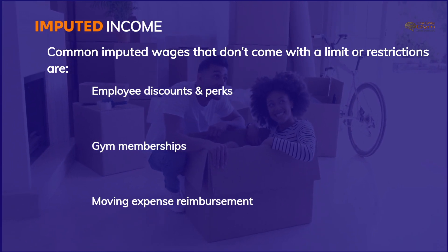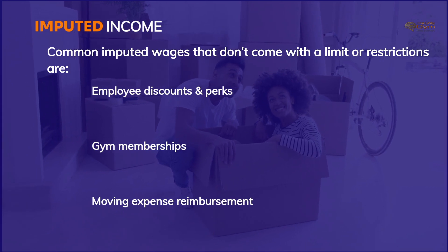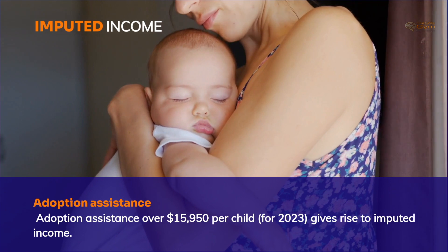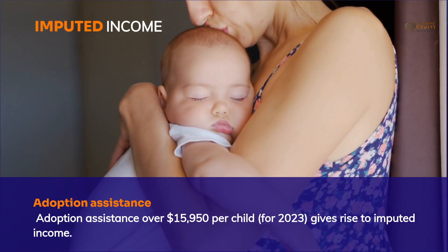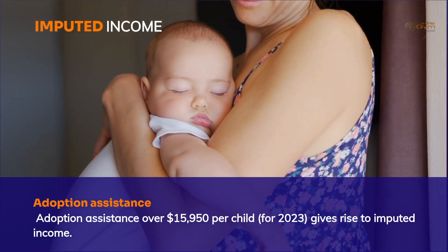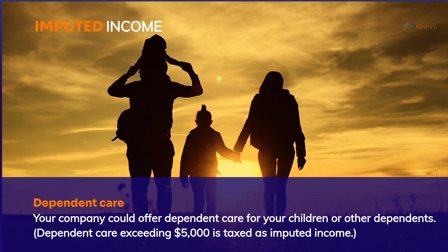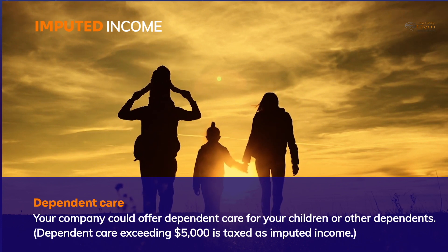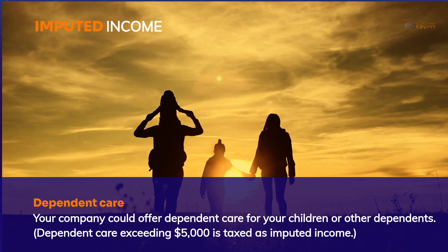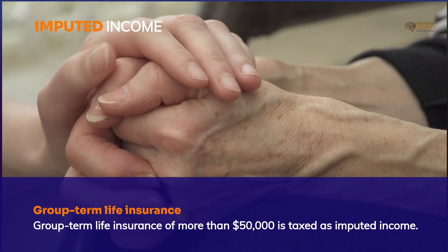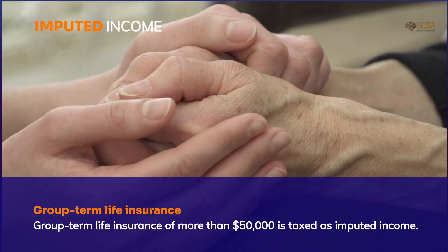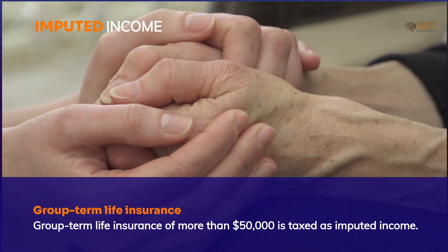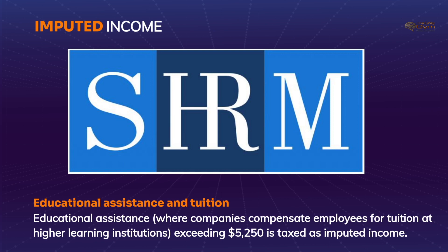Some other examples of imputed income with specific limits include: adoption assistance — generally, adoption assistance over $15,950 per child gives rise to imputed income. Dependent care: dependent care exceeding $5,000 is taxed as imputed income. Group term life insurance: group term life insurance of more than $50,000 is taxed as imputed income. Educational assistance: compensation for tuition at higher learning institutions exceeding $5,250 is taxed as imputed income.